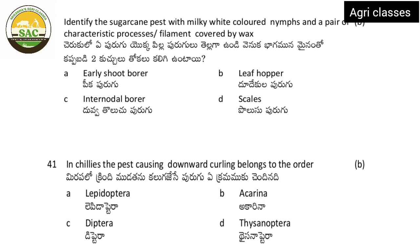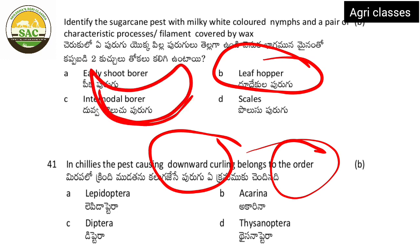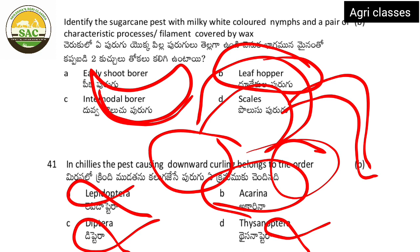Next: identify the sugarcane pest with milky white colored nymphs and a pair of filaments covered by wax. This is a leaf hopper — this is a mark of identification. Next: in chillies, the pest causing downward curling. Upward curling is caused by thrips (boat shape/cup shape), while downward curling is due to mites. The correct answer is Acarina — mites (order Acarina, not Diptera or Lepidoptera).